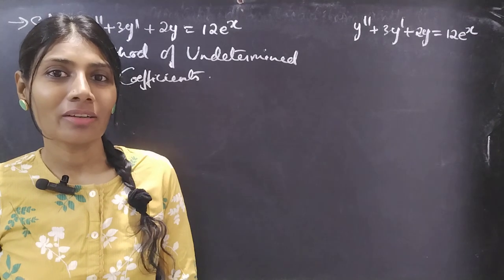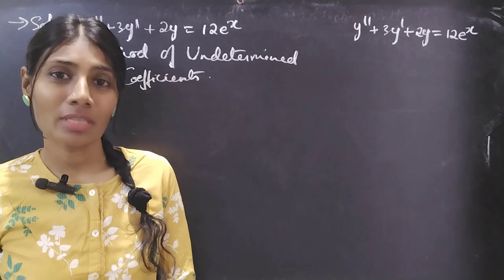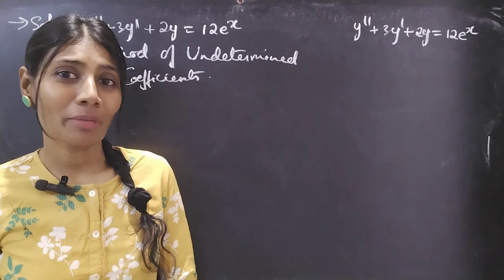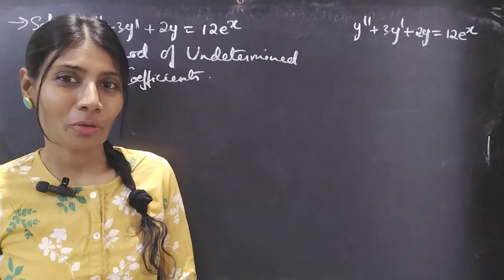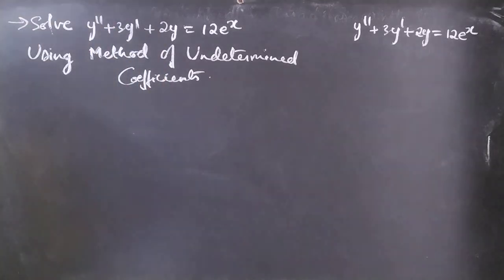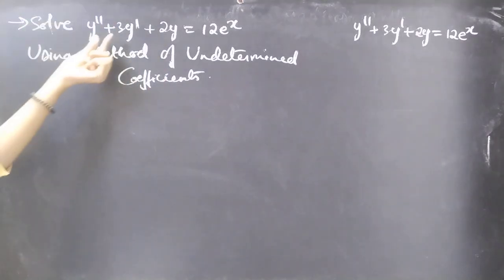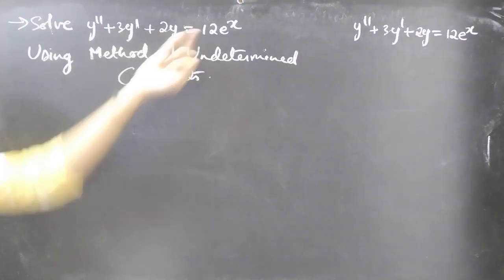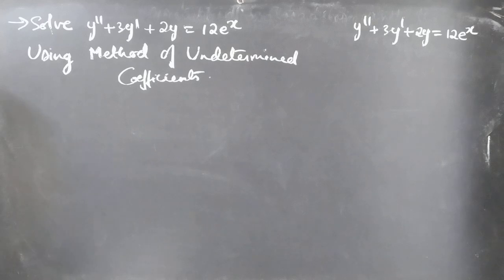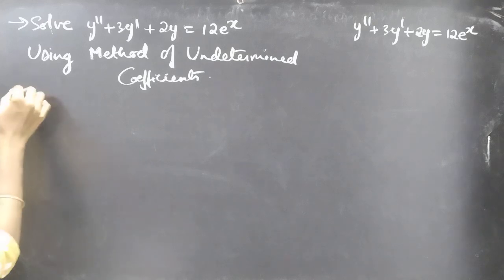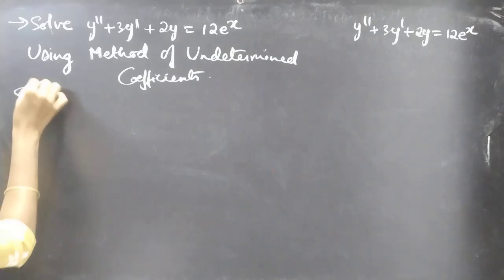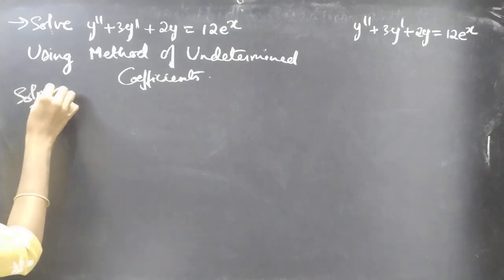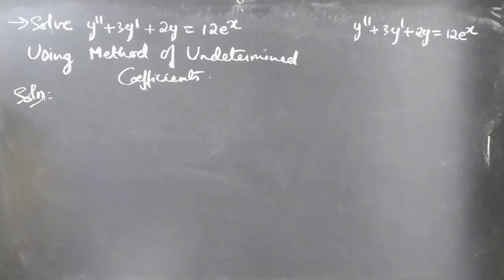Hello everyone, this is Jay Kalkna. In this video we're going to see a problem from the method of undetermined equations. The problem is: solve y'' + 3y' + 2y = 12e^x. We are given a differential equation and asked to find the solution using the method of undetermined equations.